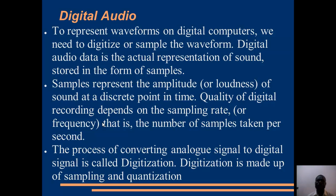Digital audio is an actual representation of sound stored in the form of samples. Samples represent the amplitude or loudness of sound at a discrete point in time. In sampling, you take various points of the sound at a particular time interval. The quality of digital recording depends on the sampling rate — that is, the amount of sampling you do per second — which is the frequency of sampling. The process of converting analog to digital signal is called digitization, and it is made up of two processes: sampling and quantization.